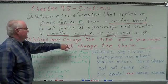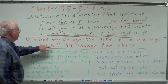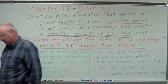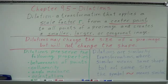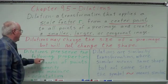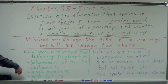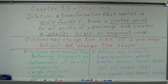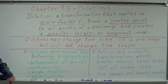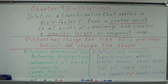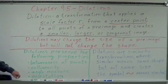Dilations may change the size of a pre-image, but will not change the shape. Dilations preserve the following properties: the betweenness of points — a point between two others is still between them; collinearity — points on a segment remain on that segment in the same order; and angle measurement — because they preserve shape, and angles determine shape.